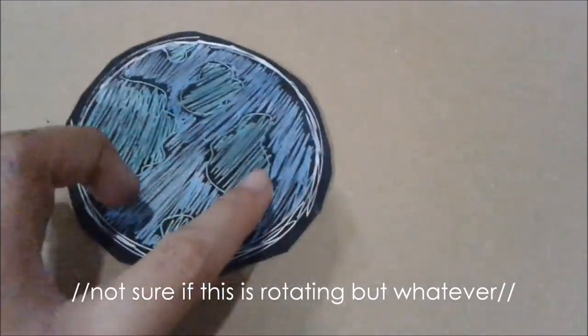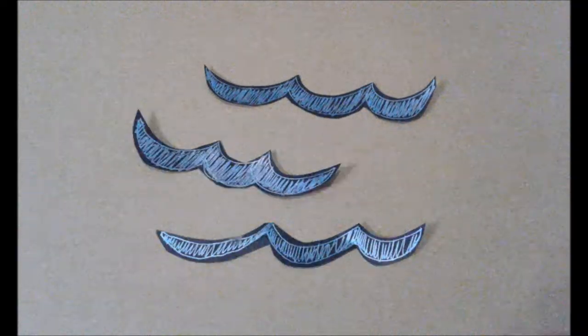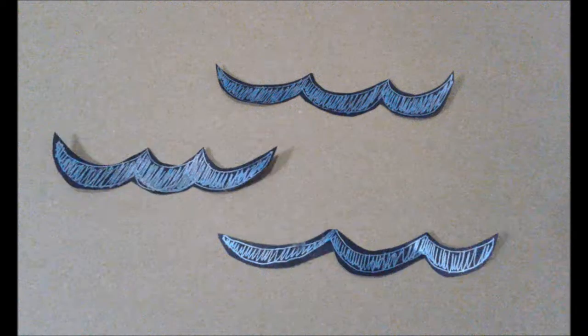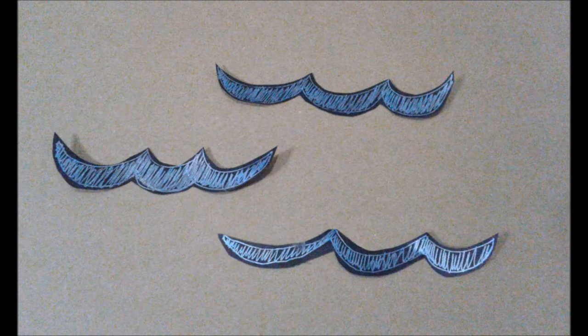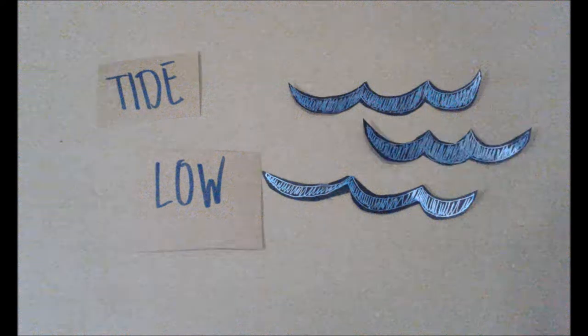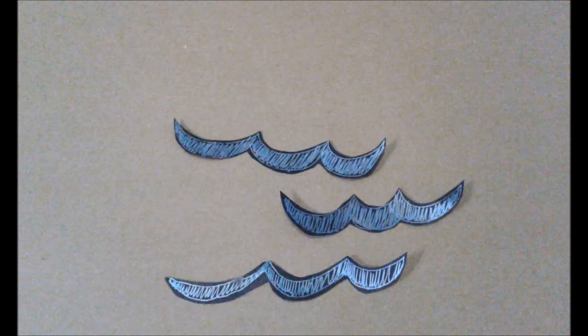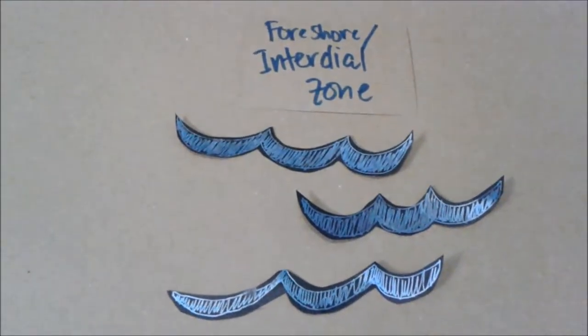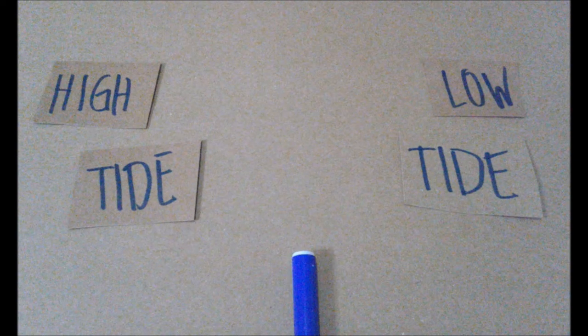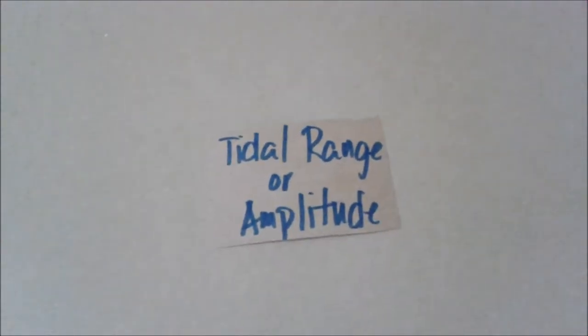At any given place, the water rises over the course of the tidal cycle to a maximum height known as high tide, before ebbing away again to the minimum low tide level. As the water recedes, it uncovers more and more of the foreshore or intertidal zone. The difference in height between the high tide and low tide is known as the tidal range or tidal amplitude.